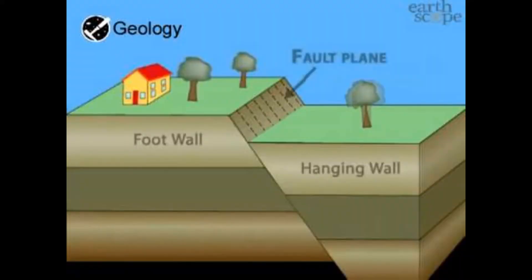A fault is a break, fracture, or crack in the Earth's crust along which movement has occurred. A fault consists of three main parts: the hanging wall, the foot wall, and the fault plane. The hanging wall is the top part of the rock above the fault plane.